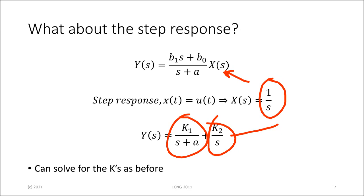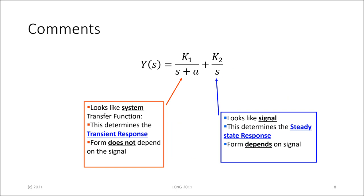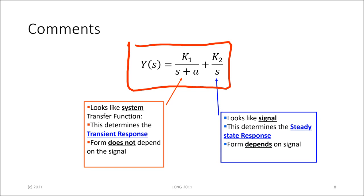This part that looks like the input — that is the part behaving like the system. The part of the step response that has S plus A on it is the part that determines the transient response. It doesn't matter what the signal looks like — that part with S plus A, which is the system, determines the transient response.